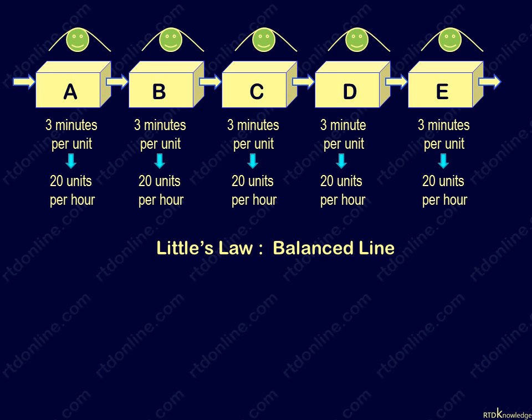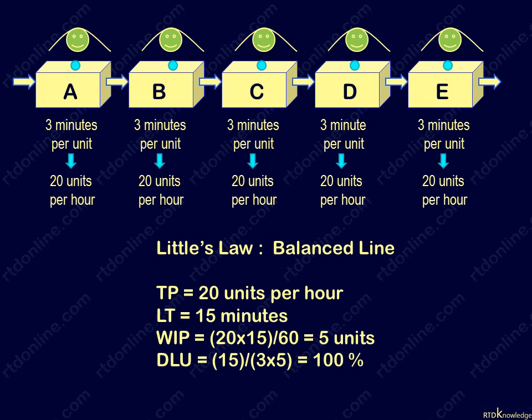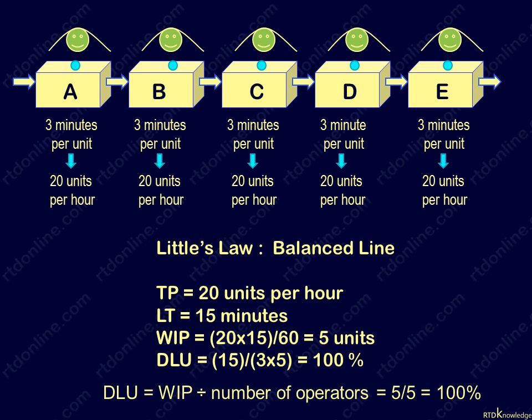Let's now apply Little's Law to our balanced line of 5 operators and find out its work in process. Here the throughput rate is 20 units per hour, but lead time is still 15 minutes, so its work in process equals 5 units. This means our 5 operators are each working on 1 unit.